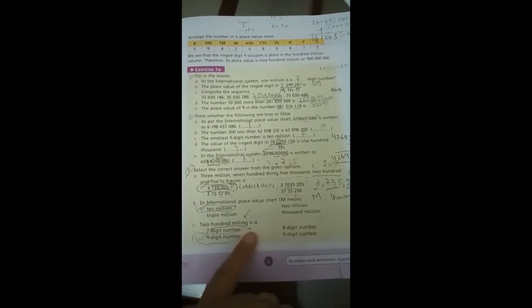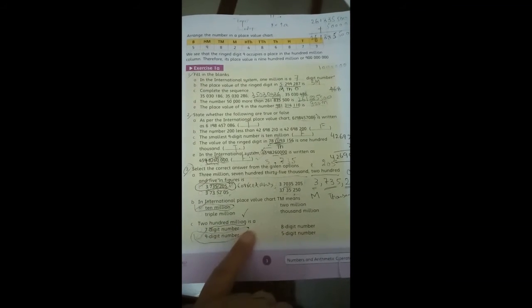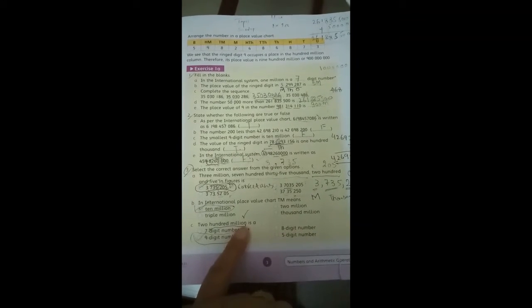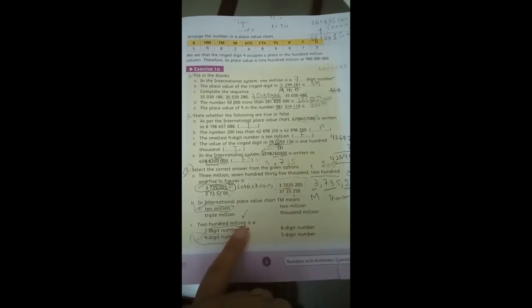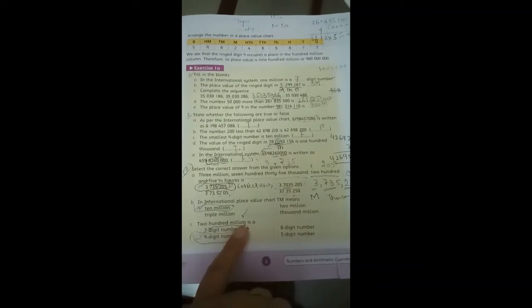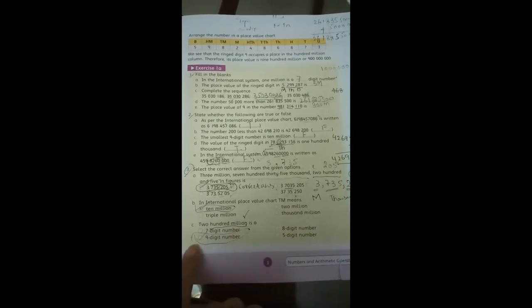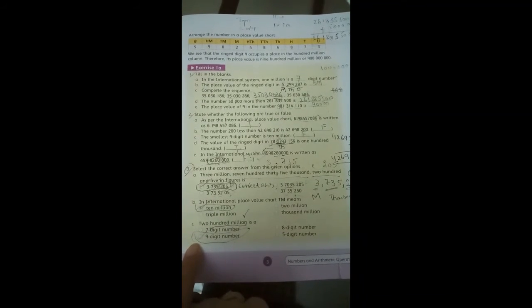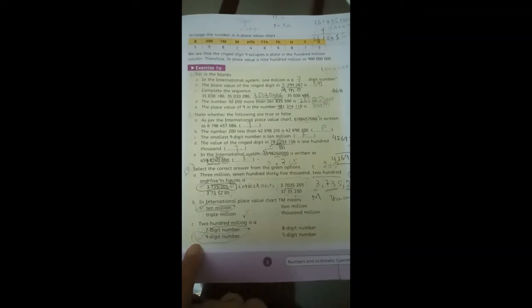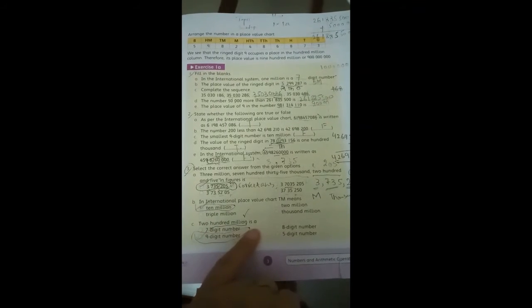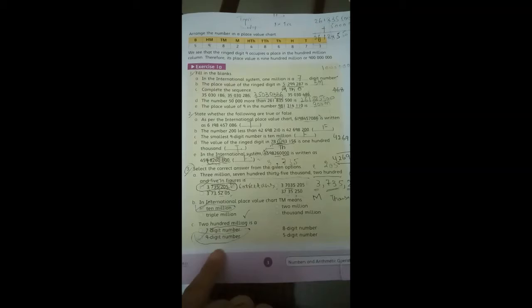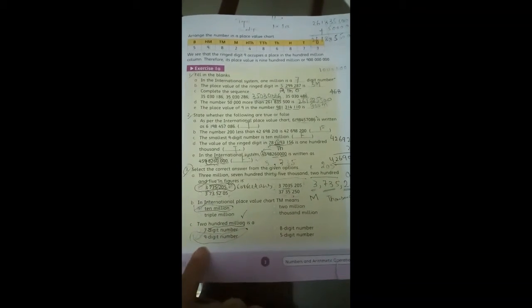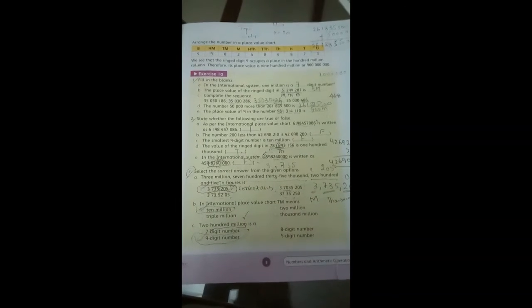C is 200 million. 200 million already has 6 digits. If you have 2 billion or 3 billion you will have 9 digits. So the correct option is 9 digits and you have to circle that number.